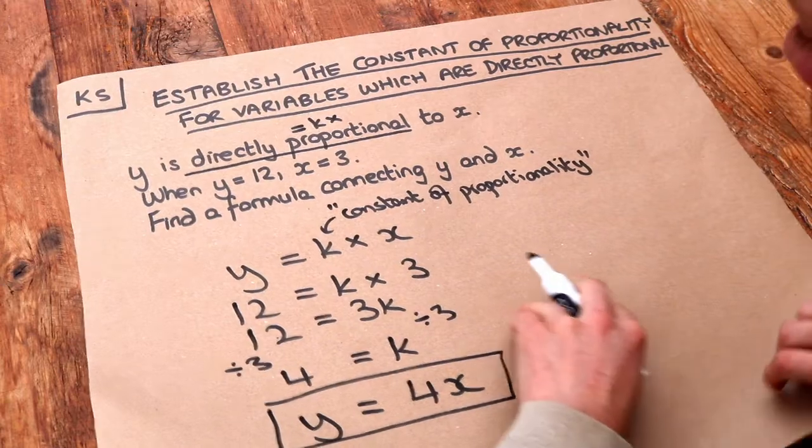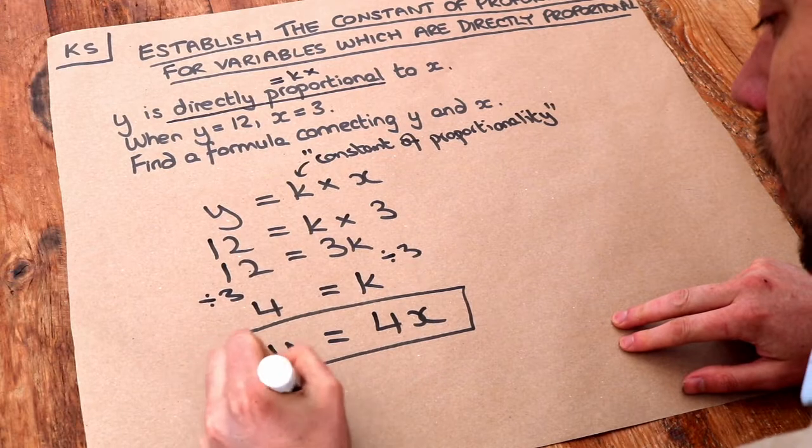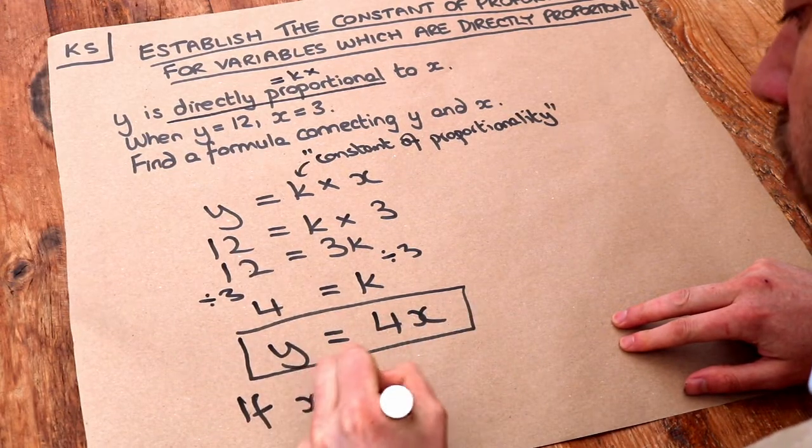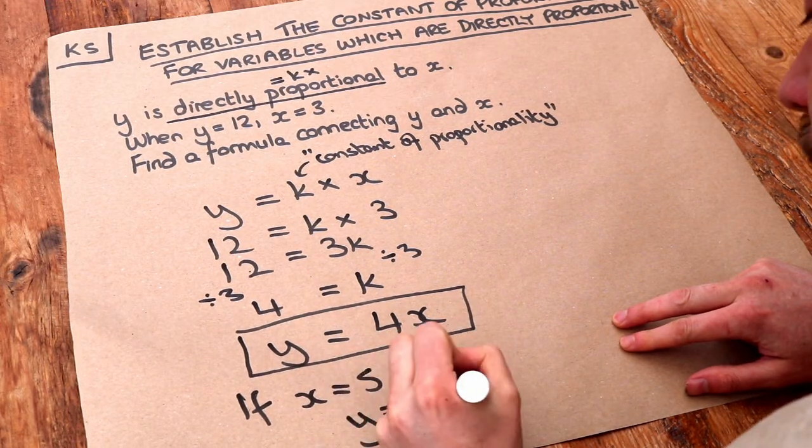And that means for example if we were to give it a different value of x, rather than 3, if x was 5, then we know that y would be equal to, according to this formula, 4 times 5, which would be 20.